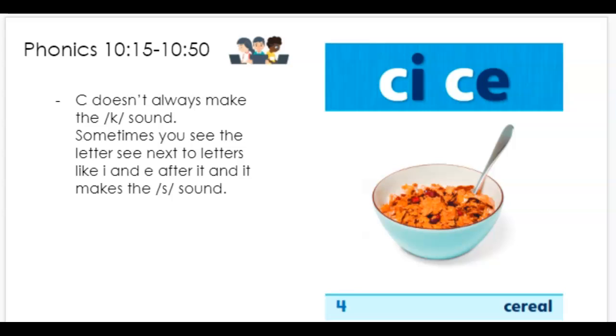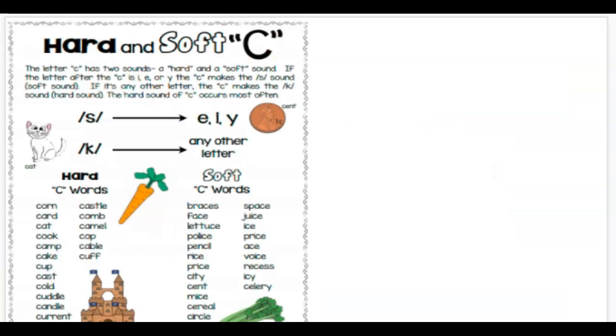So think about it, soft S. That's the way Miss Goo likes to think about it. So right here we have cereal, and we have an E after the C, so that means it makes the S sound. Let's take a look at some more.